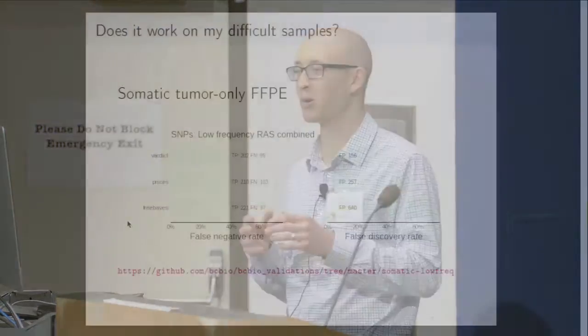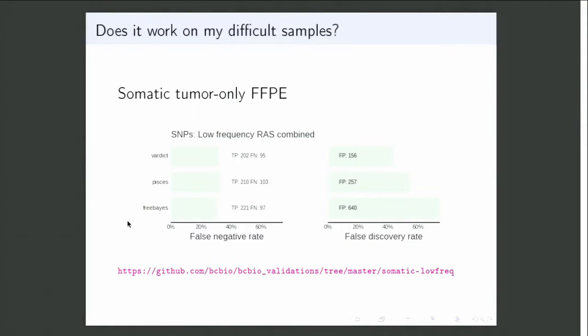If you're lucky you work on easier stuff like germline calling. If you're not lucky like me, you work on hard samples — things like low frequency calling, cancer with tumor-only FFPE samples that are full of noise. You need validation sets for these as well, and bcbio provides them. This is a good case where you have real KRAS mutations across a bunch of samples. You can compare callers, see how they're doing — obviously much worse than germline — and it's a baseline for helping to improve them.